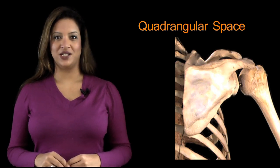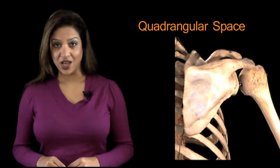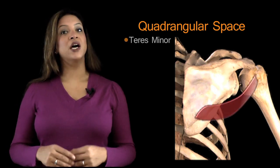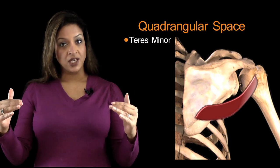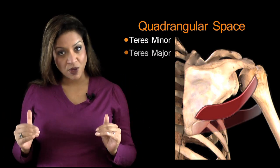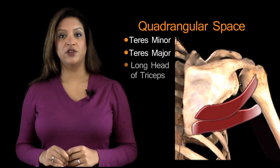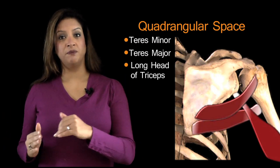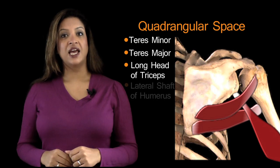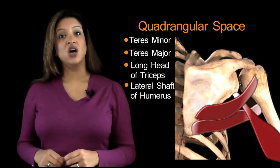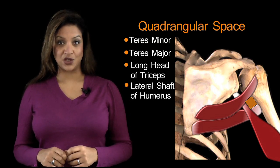The boundaries of the quadrangular space are: teres minor above, teres major below, the long head of the triceps muscle medially, and the shaft of the humerus laterally.